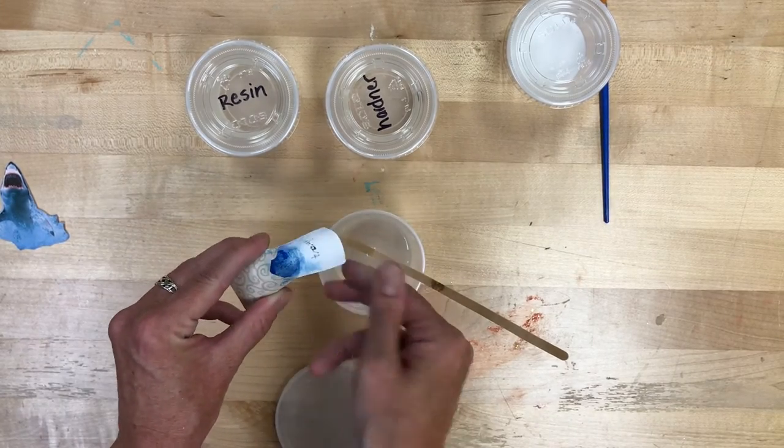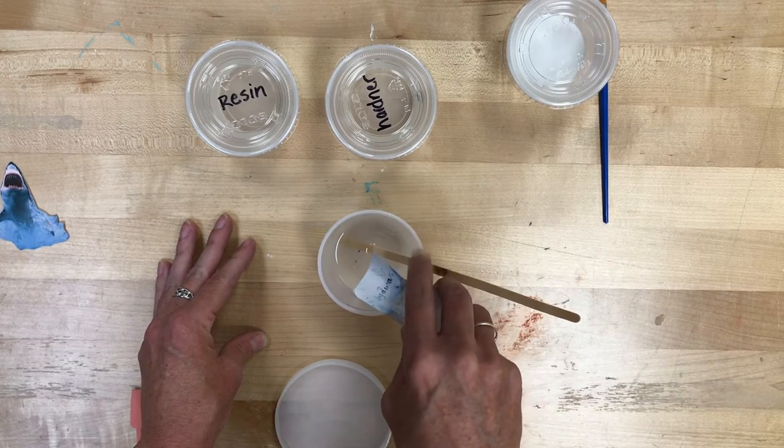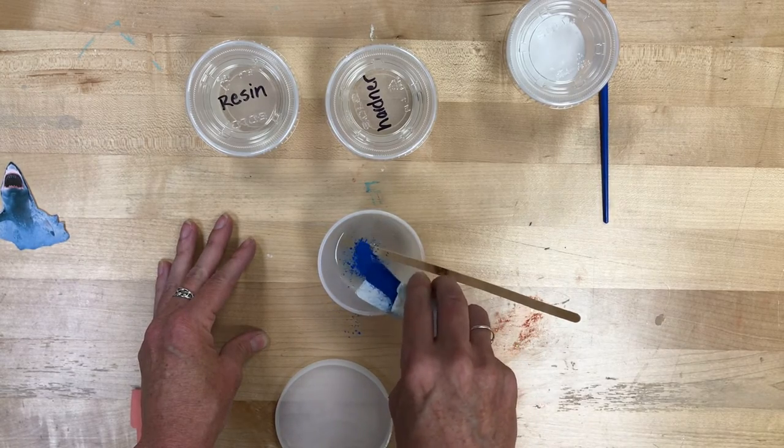That's when we're going to get our blue pigment, and we're going to pour that in. I'm going to use about half of what I have in there to start out with. You can always add more.